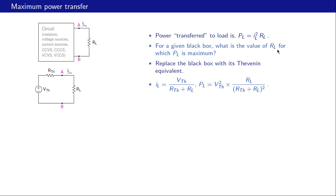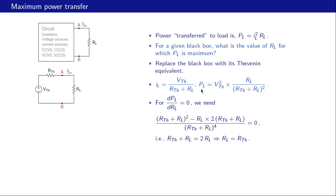To find the value of RL for which PL is maximum, we differentiate PL with respect to RL and set that equal to zero. Notice that Vth squared is a constant independent of RL and does not affect the differentiation. When we simplify, we get Rth plus RL equal to two·RL, and finally RL equal to Rth.